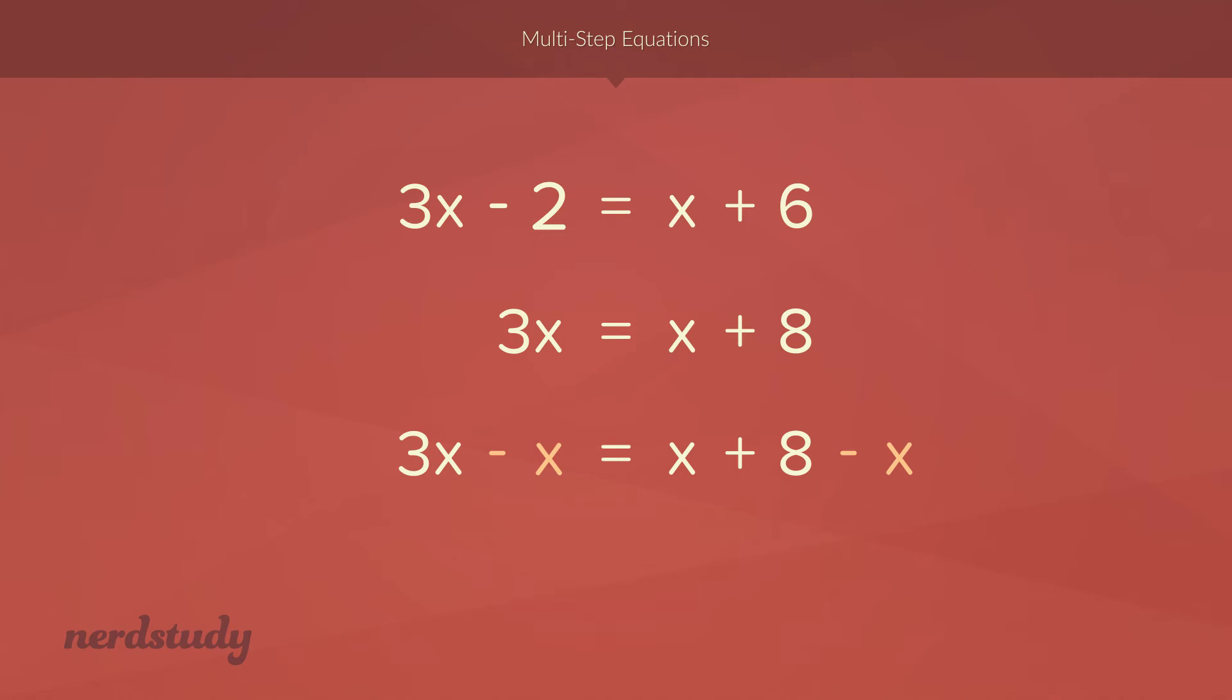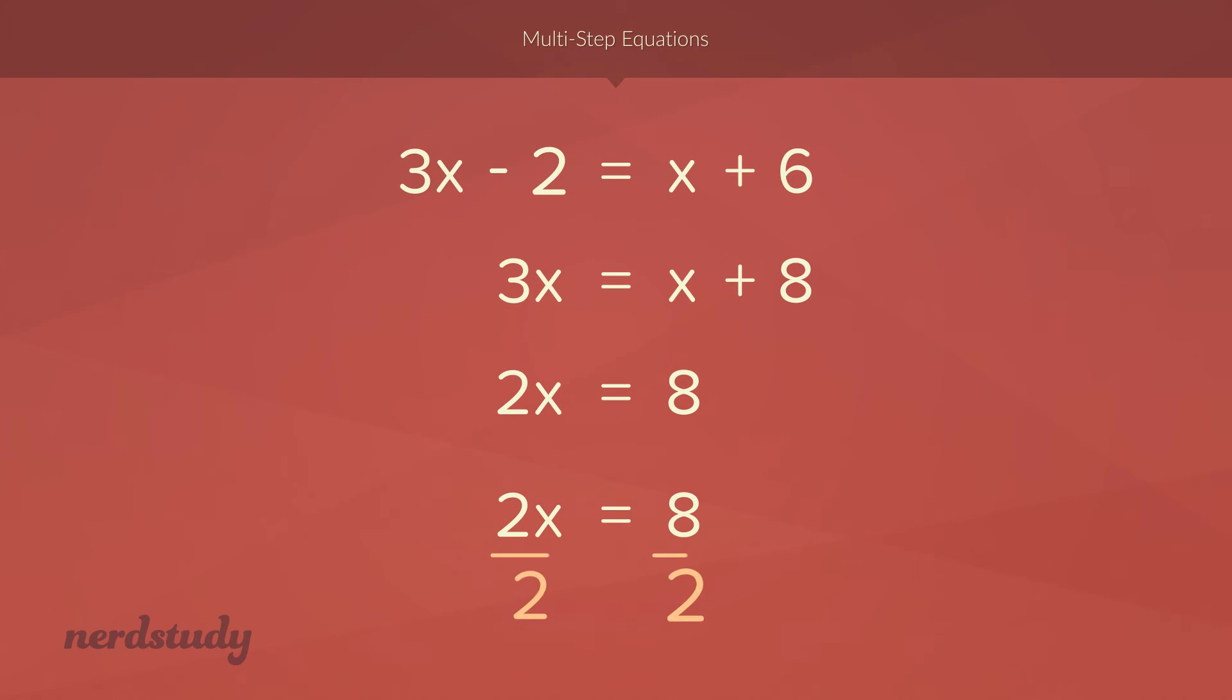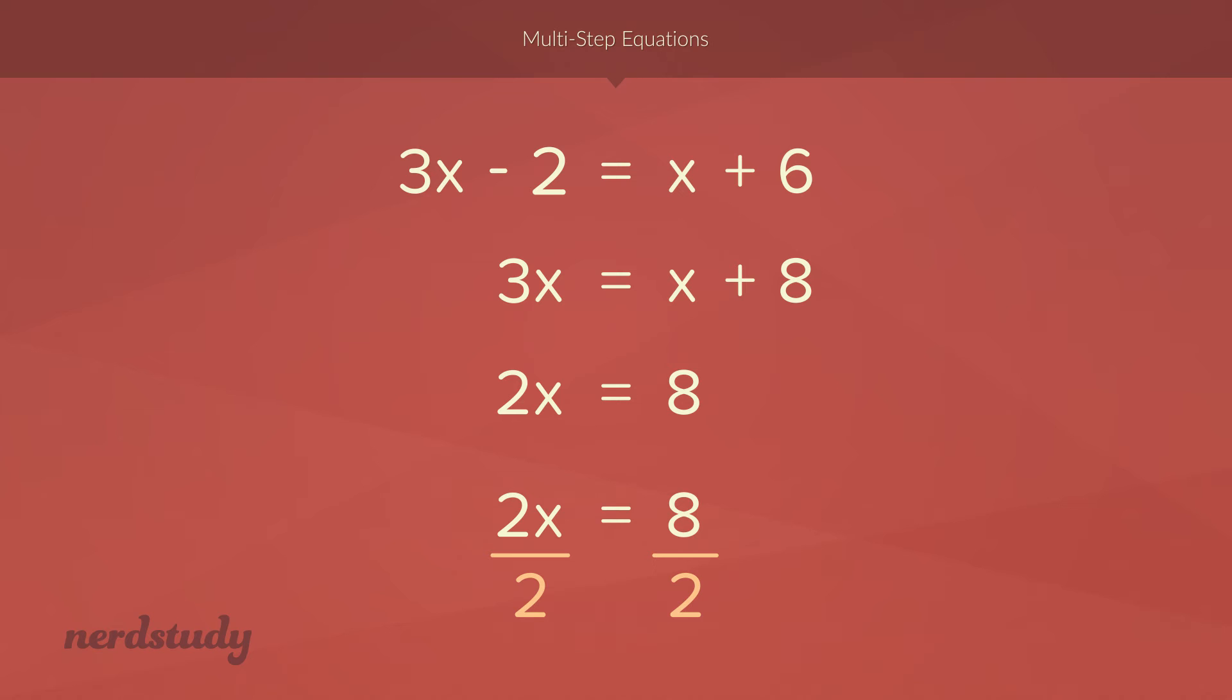So, notice how we're subtracting a variable to collect the variable onto the left side. It is completely fine to do this. Now, remember that x is the same as 1x. And so, 3x minus 1x is 2x. We divide both sides by 2 and we get x equals 4.